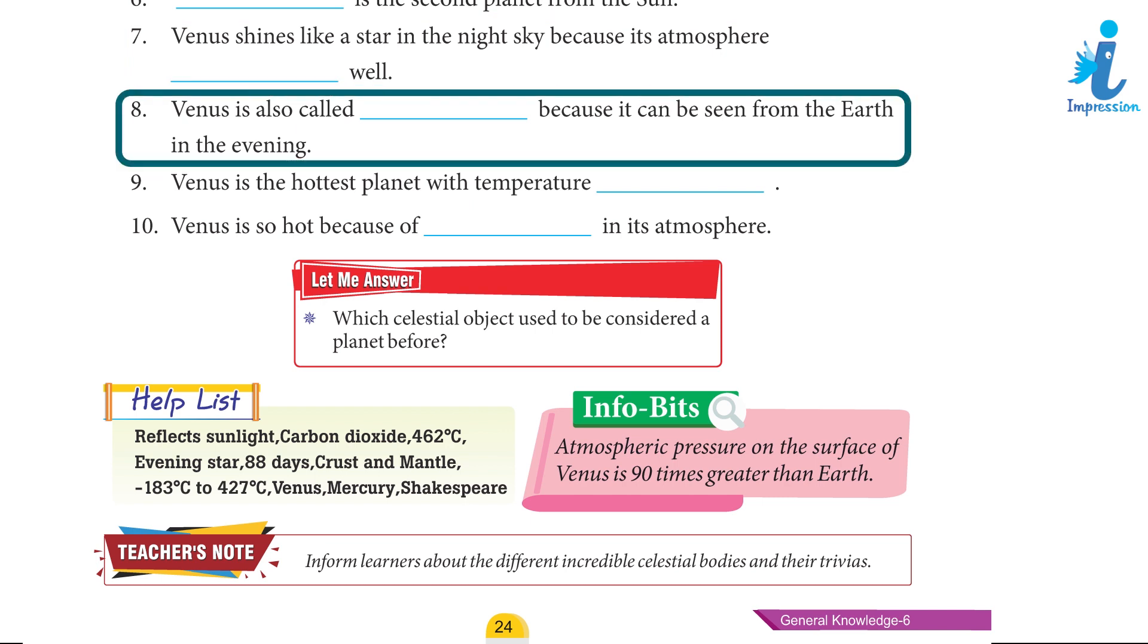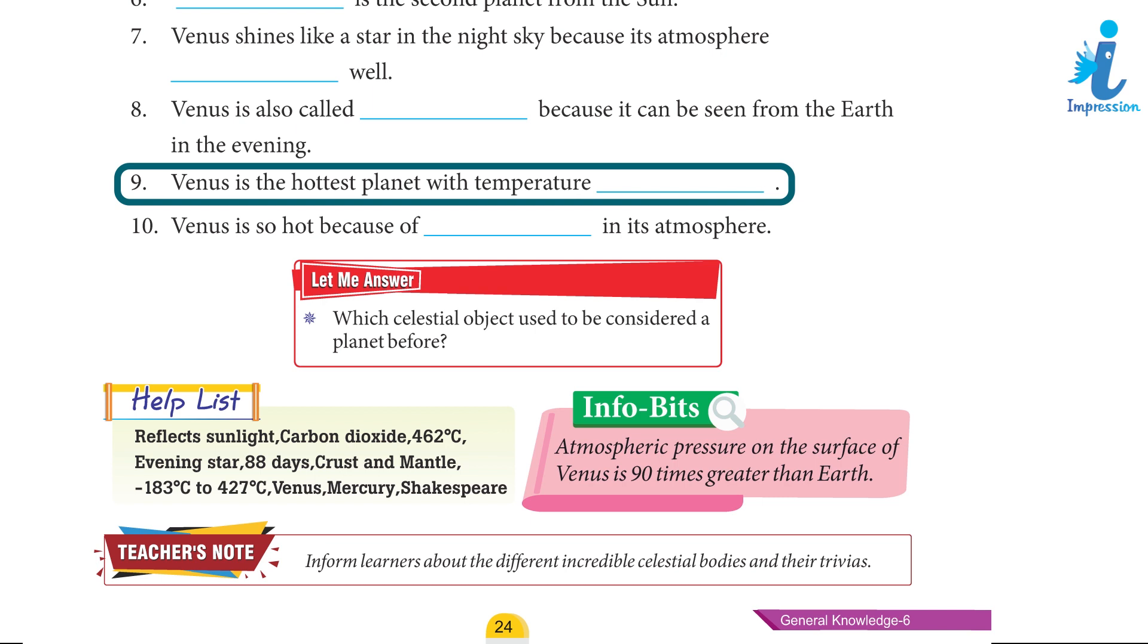8. Venus is also called evening star because it can be seen from the Earth in the evening.